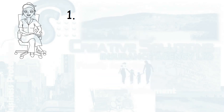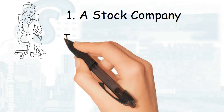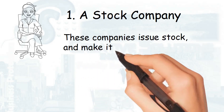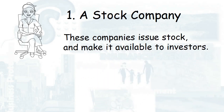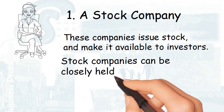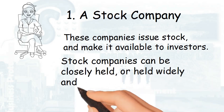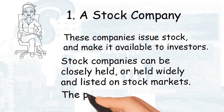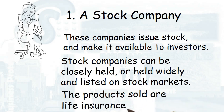Life insurance companies operating in Canada come in one of three corporate structures. The first is a stock company. These companies issue stock and make it available to investors. Stock companies can be closely held, or held widely and listed on stock markets. The products sold are life insurance products.